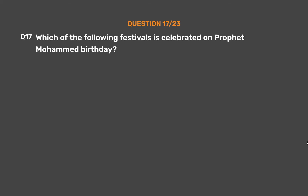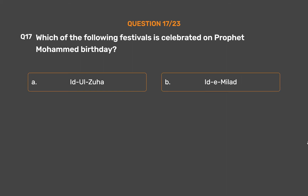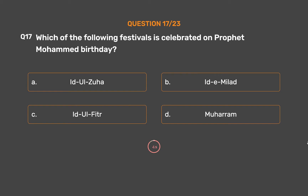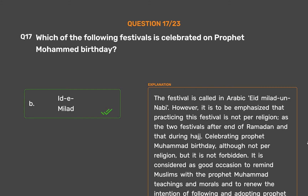Question No. 17. Which of the following festivals is celebrated on Prophet Muhammad's birthday? Option A, Idul Zuha; Option B, Eid Milad; Option C, Idul Fitr; Option D, Muharram. The correct answer is Option B, Eid Milad. The festival is called in Arabic Eid Milad-un-Nabi. Celebrating Prophet Muhammad's birthday is considered a good occasion to remind Muslims of the Prophet Muhammad's teachings and morals and to renew the intention of following and adopting his guides.